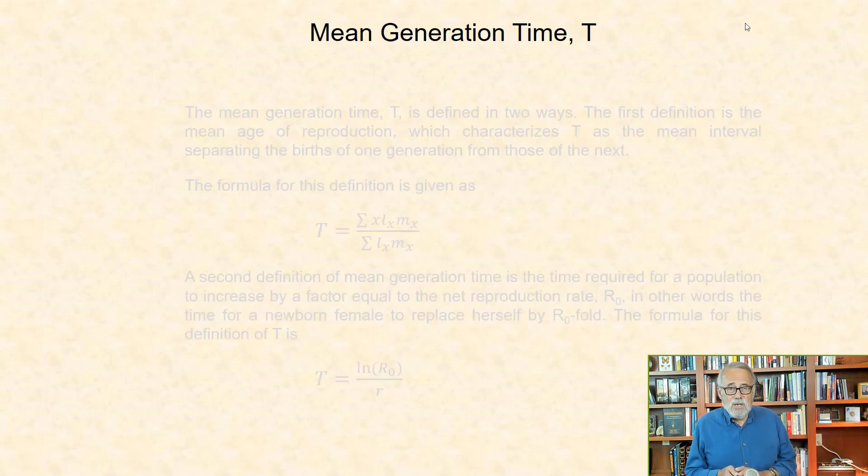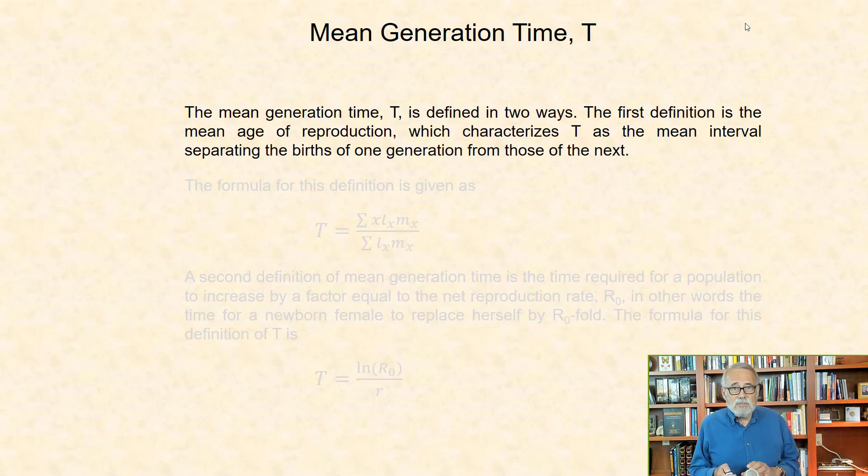Mean generation time. The last parameter I will cover in this module is mean generation time T, that is defined in two ways. The first definition is the mean age of reproduction, which characterizes T as the mean interval separating the births of one generation from those of the next. The formula for this definition of T is simply the sum of the product of Lx and Mx, weighted by age, divided by the sum of the product of Lx and Mx, which equals the net reproductive rate.